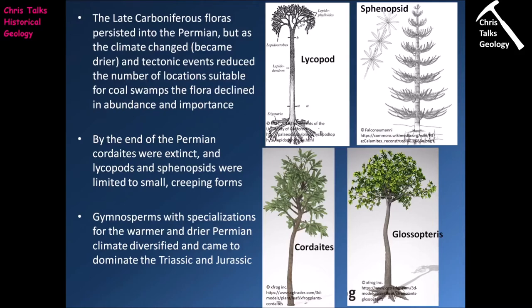The late Carboniferous floras persisted into the Permian, but once in the Permian we see changes making conditions more challenging for the coal swamp floras. First, as we transition from the Carboniferous into the Permian, the global climate becomes hotter and a lot drier, so those coastal boggy swampy locations started drying out — a major problem for the seedless vascular plants. At the same time, the formation of the supercontinent Pangaea reduced available coastline, destroying many locations that had existed earlier, substantially reducing the number of locations suitable for coal swamps.